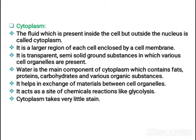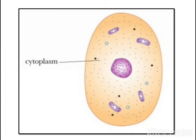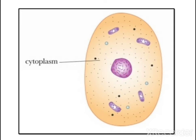Cell organelles are the organs of the cell, and the cytoplasm facilitates exchange of materials between them. It is the site for different types of reactions like glycolysis — the breakdown of glucose to give energy. Cytoplasm takes very little stain, so when you observe it under the microscope after staining, it appears lighter in colour. In the diagram, you can see the cytoplasm, the nucleus, and organelles like mitochondria — a simple diagram showing the plasma membrane, cytoplasm, and nucleus.